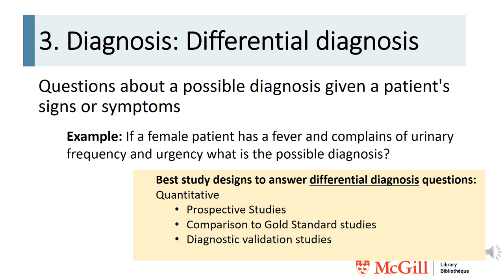There are two types of diagnosis questions. Differential diagnosis questions are about a possible diagnosis given a patient's signs or symptoms. For example: if a female patient has a fever and complains of urinary frequency and urgency, what is the possible diagnosis? The best study designs to answer differential diagnosis questions are quantitative: prospective studies, comparison to gold standard studies, or diagnostic validation studies.